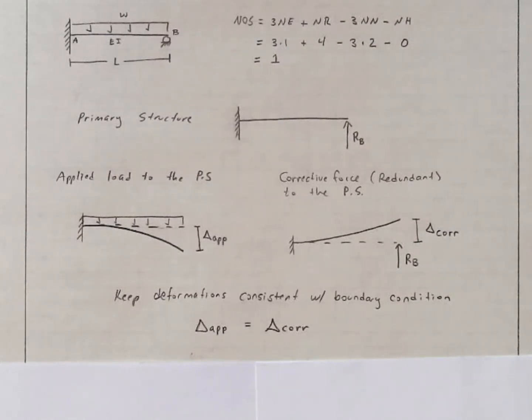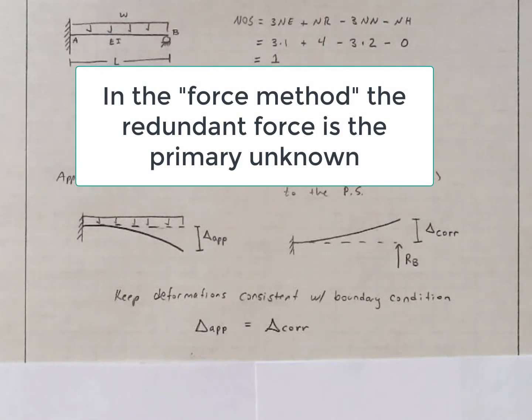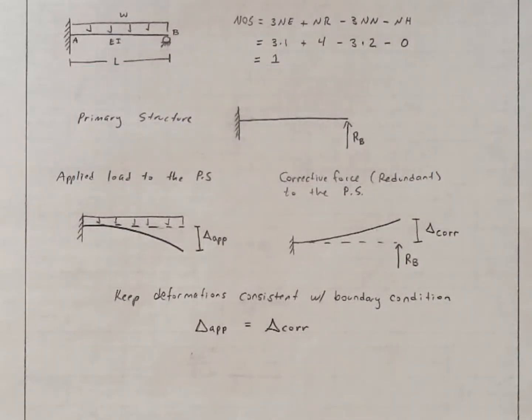Incidentally, another name for this method is the force method. And the reason that it's called the force method is because this value of R sub B is unknown. Now pause the video.